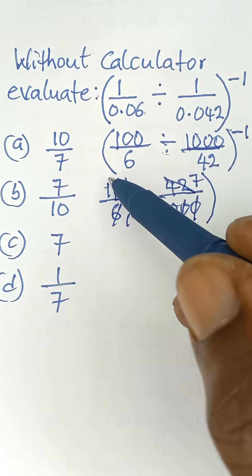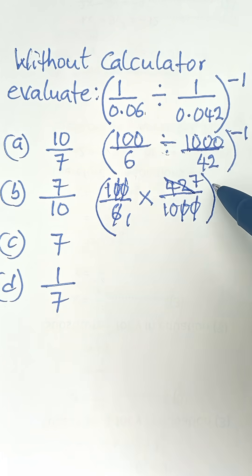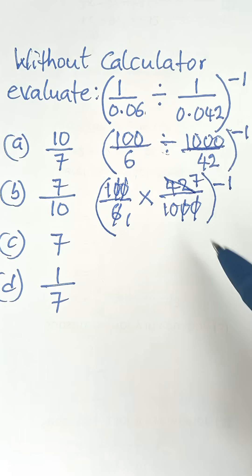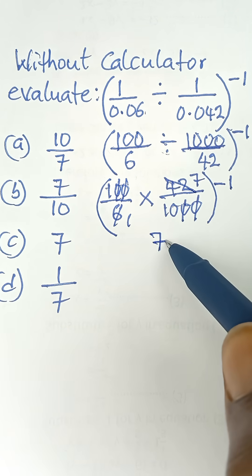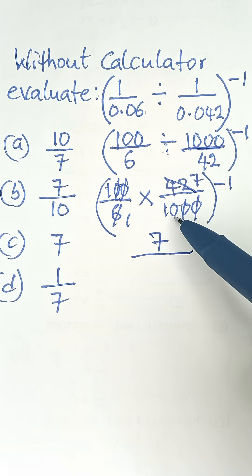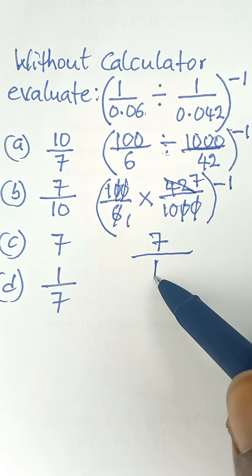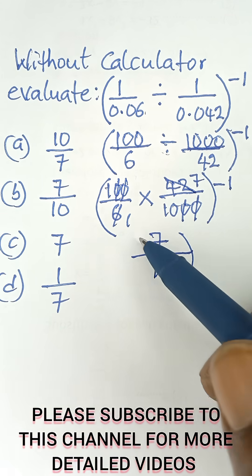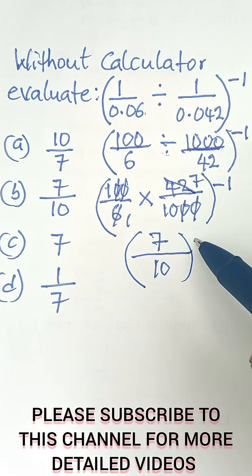Don't forget, all raised to the power of negative 1. So what I have up there is 7 as a numerator, all over what I have left here is this 10. And so we'll say 7 over 10, all raised to the power of negative 1.